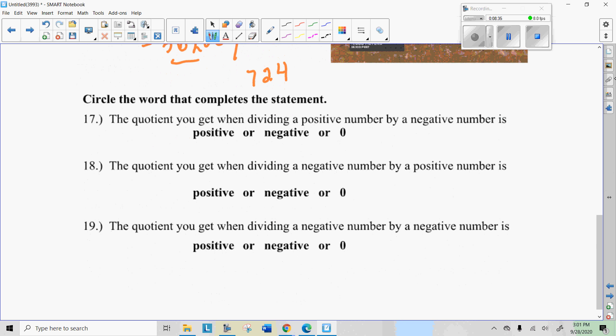All right. So, circle the word that completes these statements. So, here we are, we're kind of reviewing, reflecting on what we learned. So, the quotient, quotient, by the way, means divide, write that in your notes if you're not sure about that. When you divide a positive number by a negative number, is it positive, negative, or zero? Go ahead, you guys, do all three of those, and you can check back and see if you got the right answer. All right. So, here's what I got for those.